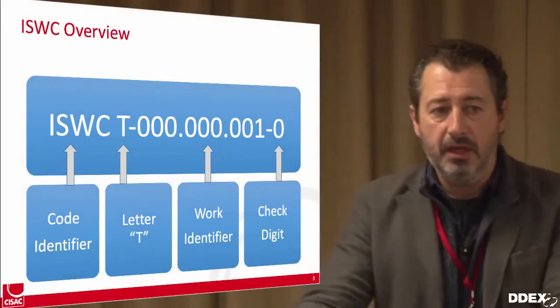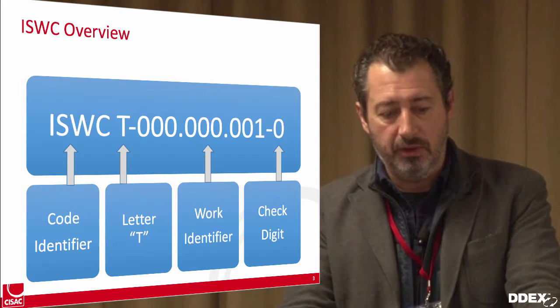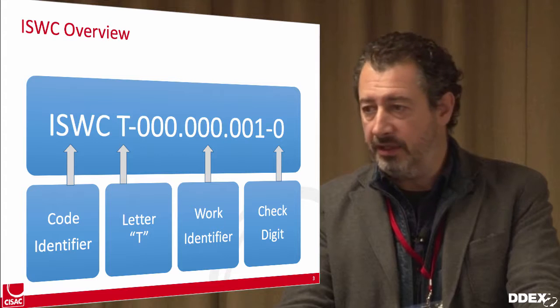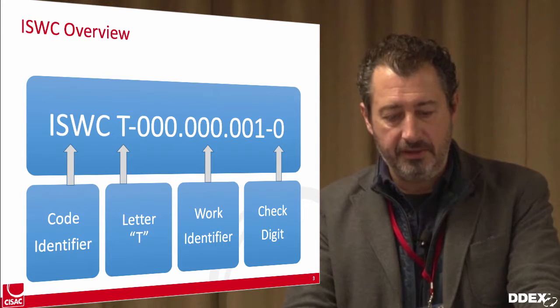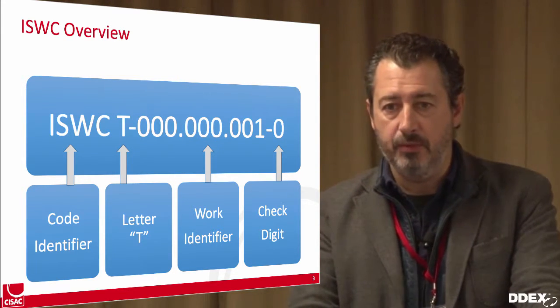There is a lookup service available at ISWCnet.csac.org where you can search all this information — search by ISWC to retrieve related metadata, or search by metadata to receive the ISWC. In written form, an ISWC is preceded by the word ISWC, then the letter T, followed by nine digits as the work identifier, and a check digit at the end. It is a very simple structure.